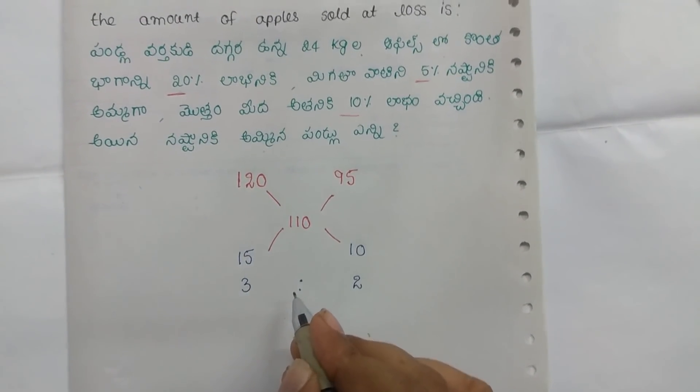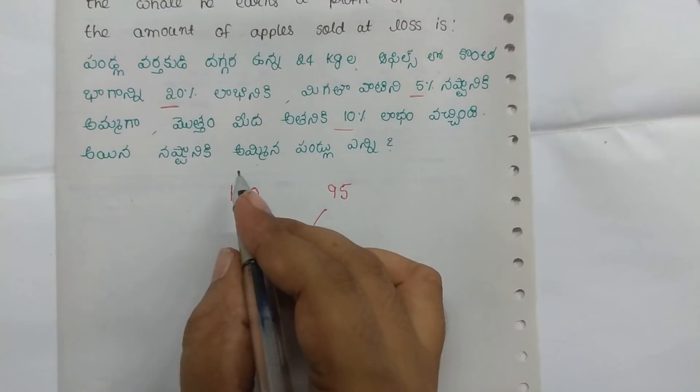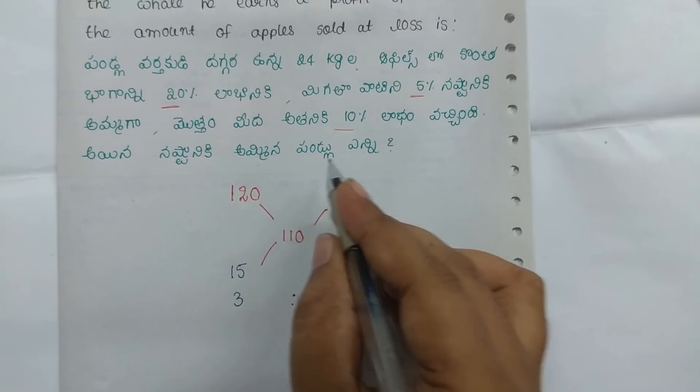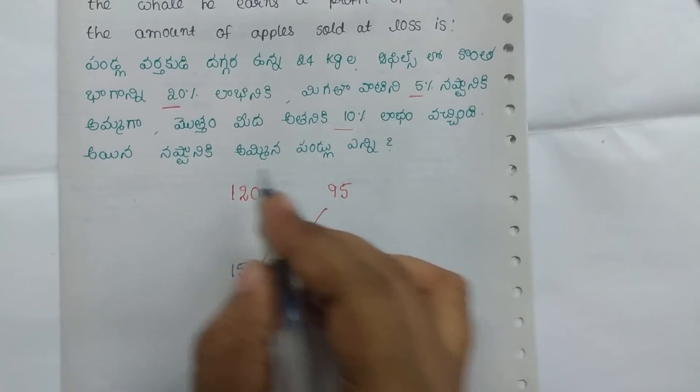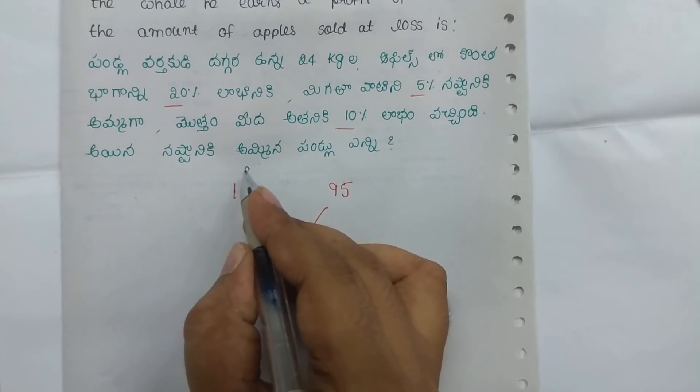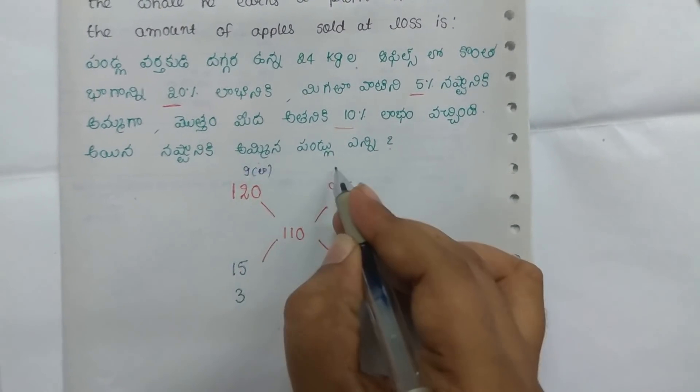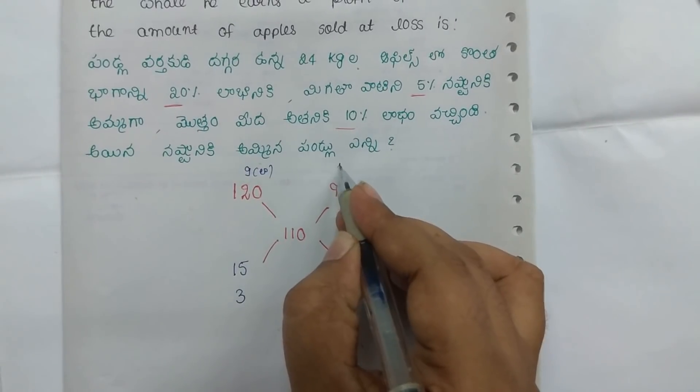So we have to count the ratio. We count the ratio. This is gain. This is loss.